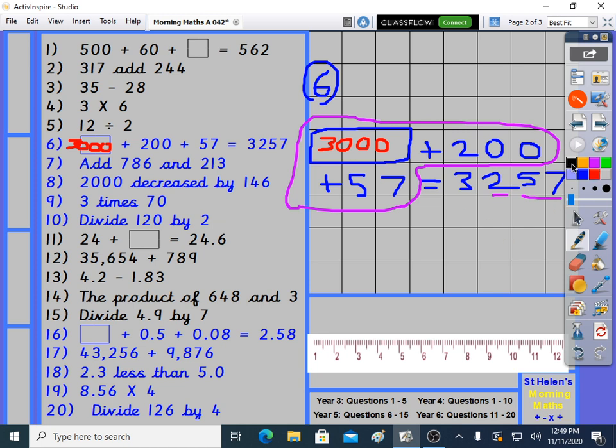Question 7 is next. This is quite a small addition for year 4, just so you don't forget how to do the easiest things or the smaller things. Might not be easy, we'll see. 186 plus 213. 6 plus 3 is 9. 8 plus 1 is 9 as well. 7 plus 2 is 9. 999. They're just different ways of making 9 aren't they, those 3 columns.